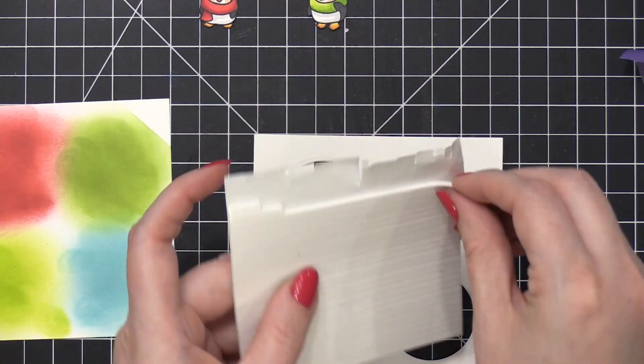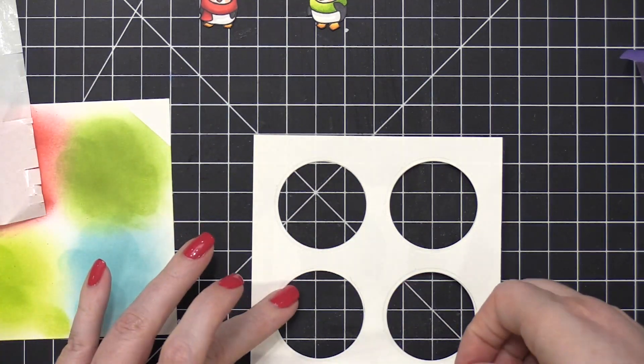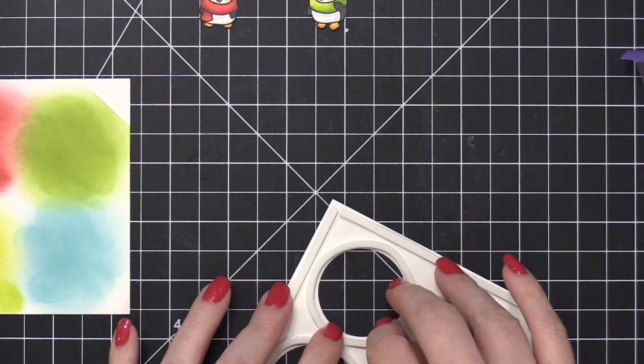So the cool thing about those inks is that they might look splotchy when you first apply them, but they do dry back and kind of flatten out and are much more solid.